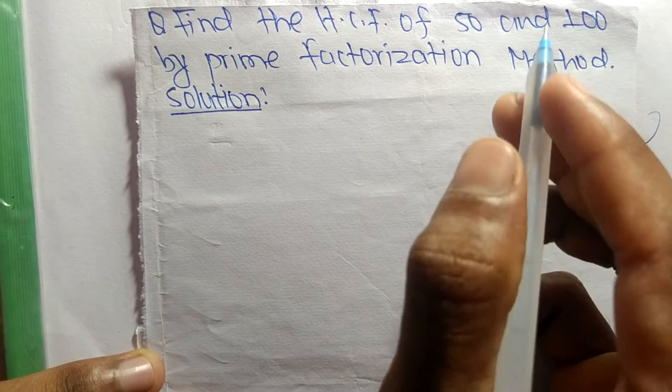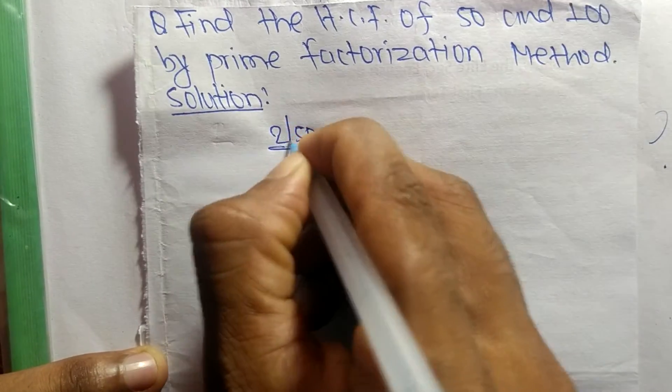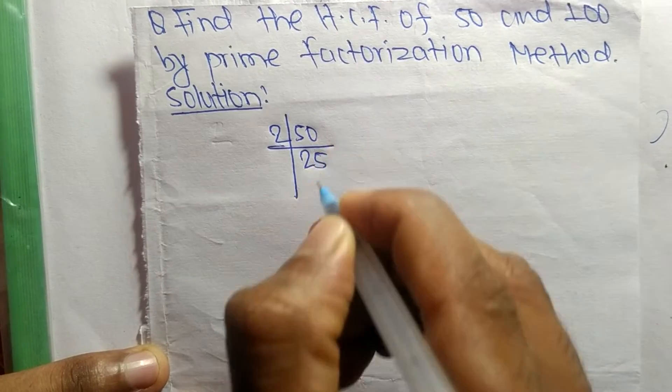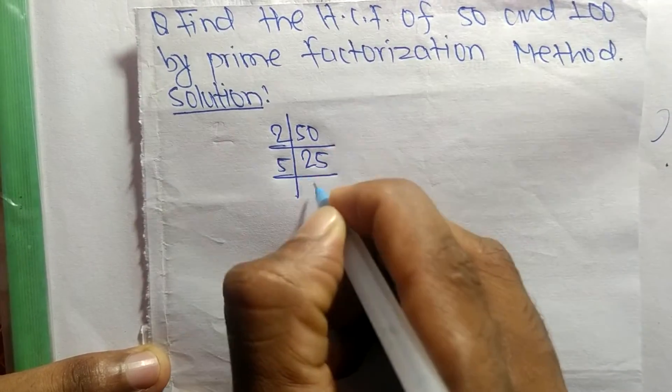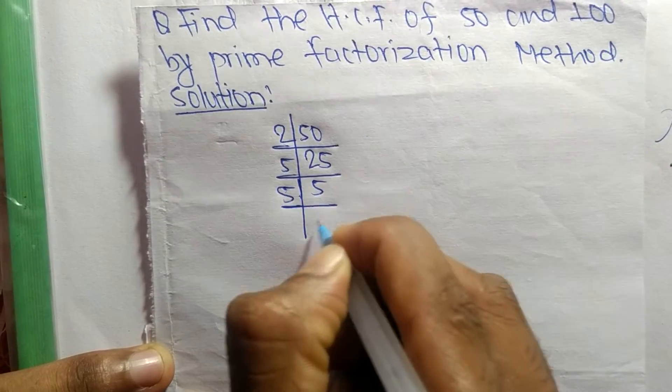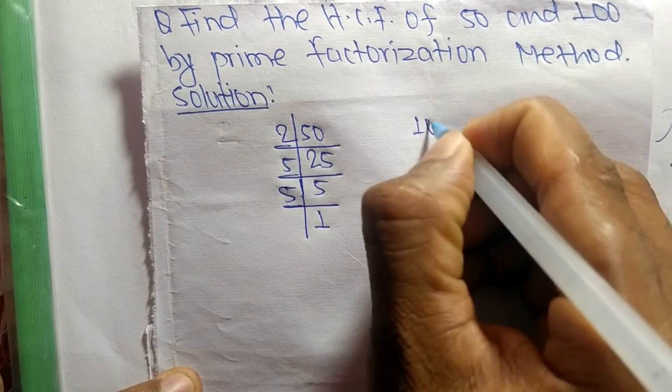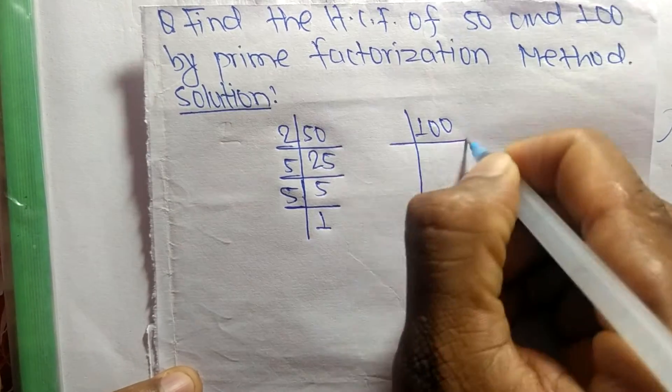First, we find out the prime factors of 50. So it is 2 times 25 equals 50, 5 times 5 equals 25, and 5 times 1 equals 5. Now for the prime factors of 100.